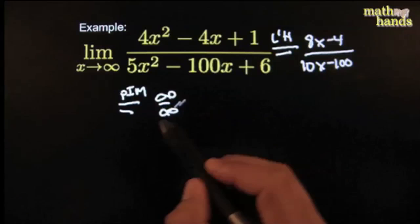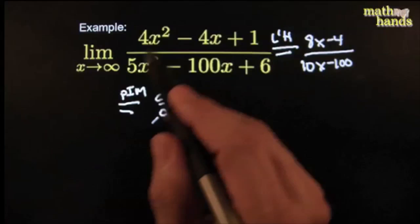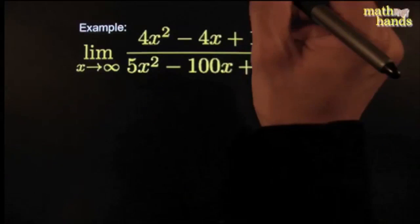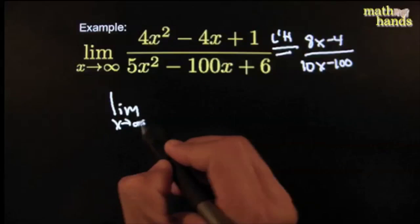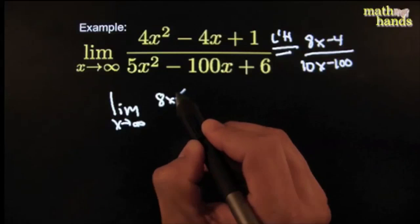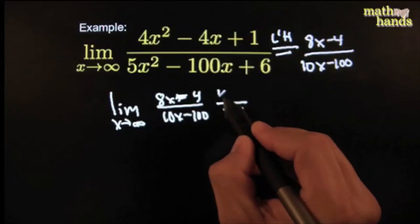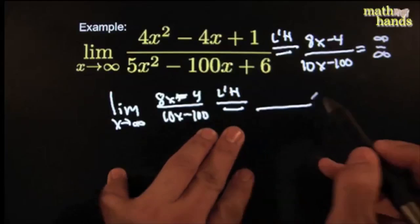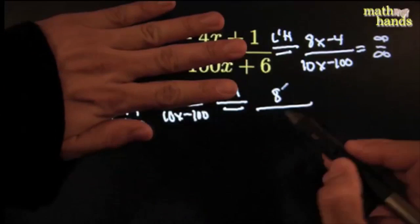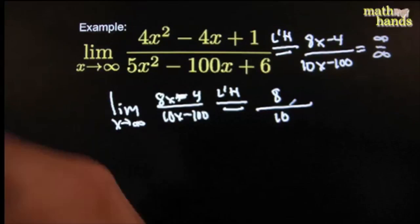Plug-in gives you infinity over infinity again — so it's L'Hôpital time again. Write out: limit as x→∞ of (8x − 4)/(10x − 100). Use L'Hôpital: derivative of the top is 8, derivative of the bottom is 10. That gives you 8/10. Done.